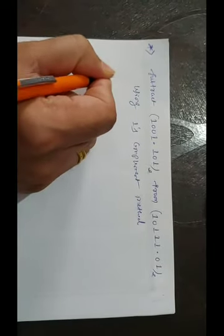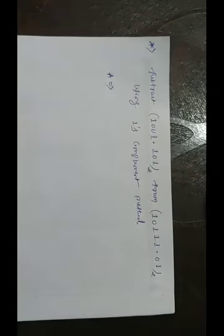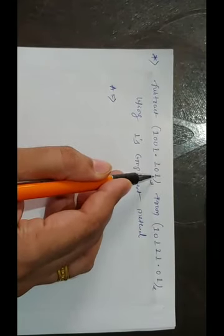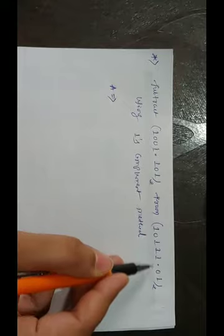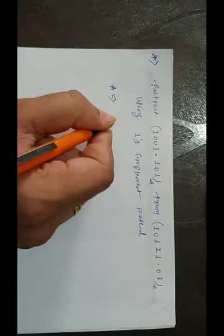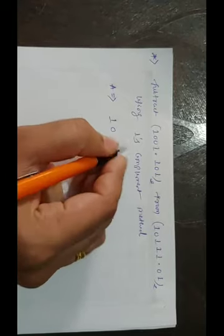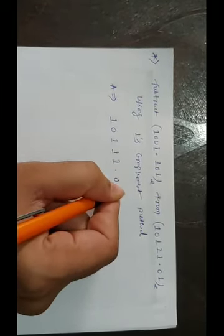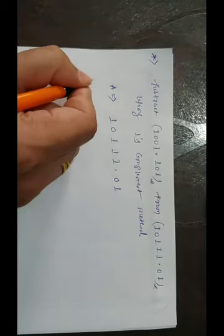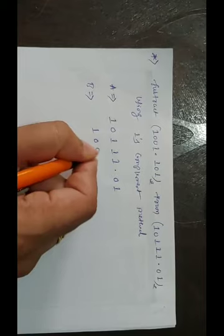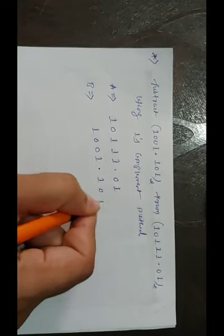First write down our A. That means 1001.101 from this number. We have to subtract this number. That is why my A becomes this one, 10111.01. My B is 1001.101.